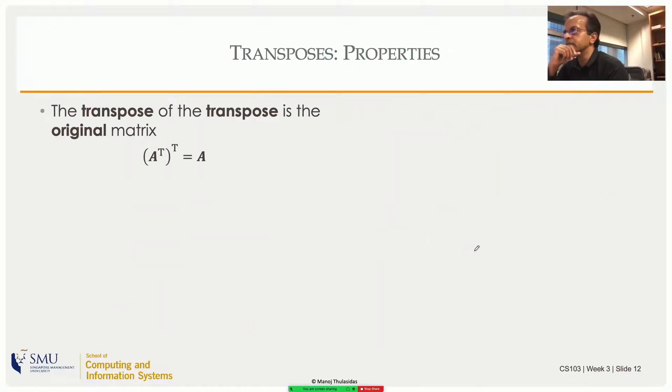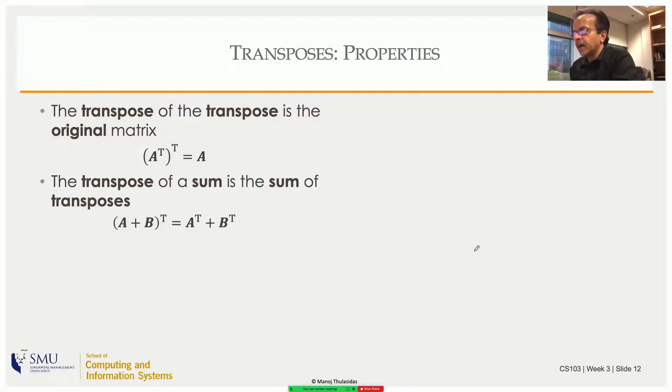So let's look at some of the properties of transposes. So we take a transpose and transpose it again. So (A^T)^T is A because you're just flipping it once and then flipping it again. So you get the original one back. And again, by looking at the definition, you can say that the transpose of a sum of two matrices is a sum of the transpose of the matrices.